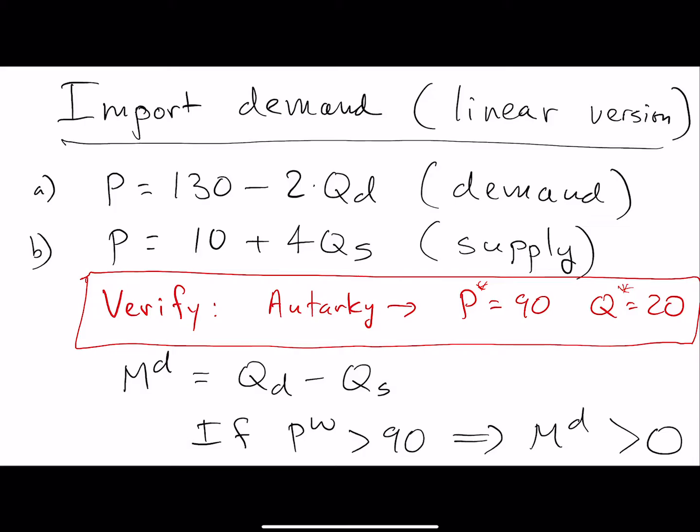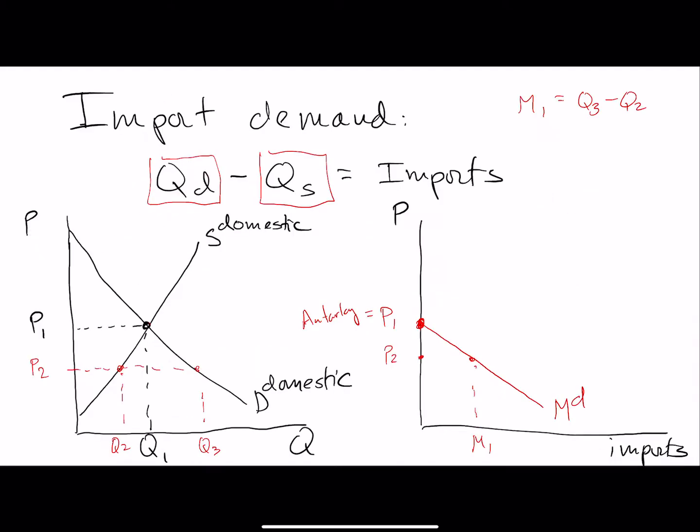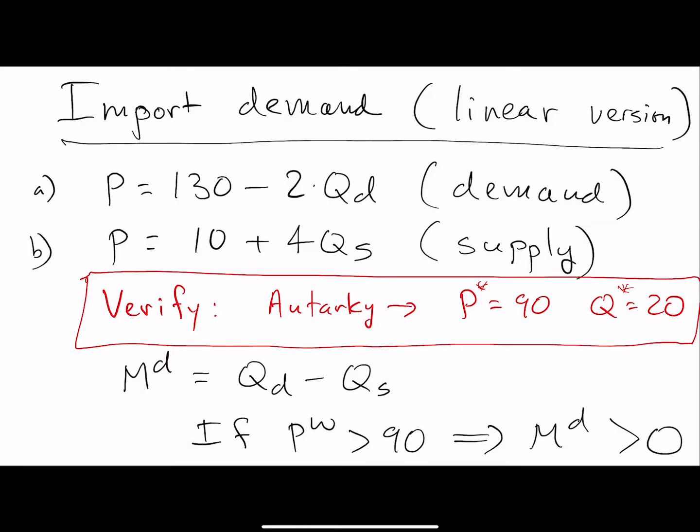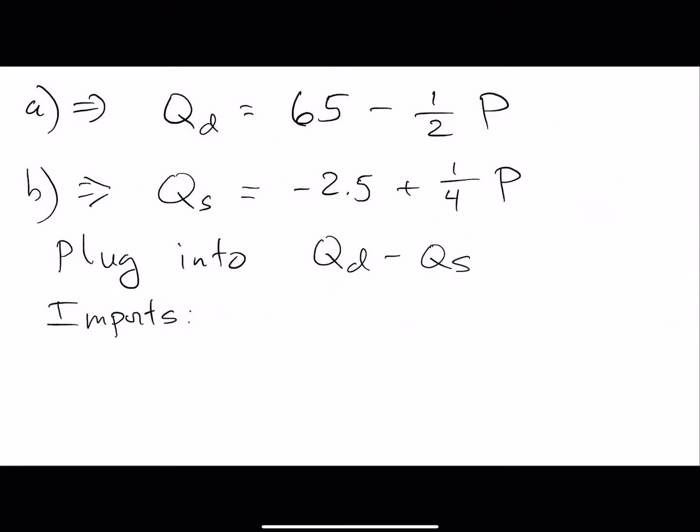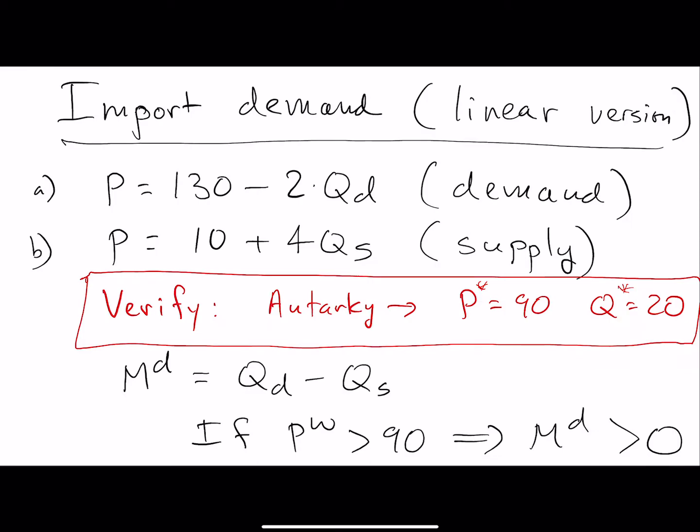We have this combination which is the analog to that point right here in this graph, so we have supply and demand equal each other. The import demand is going to be equal to whatever the quantity demanded is minus the quantity supplied. If the world price is greater than that autarky price, you're going to have positive imports. Let's look at this in a bit more detail using the specific example.